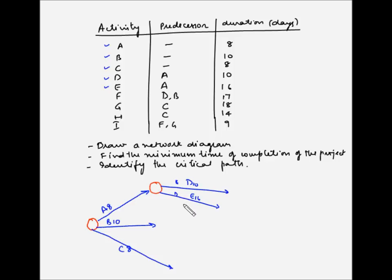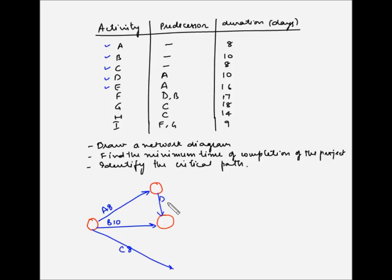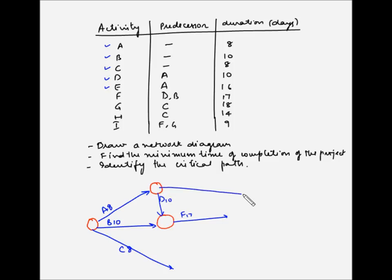Let me redraw the diagram. I'll draw a node here, and from this node draw D which takes 10 days. Since F is dependent on D and B, from this node I can draw F which takes 17 days. And I'll draw E here, which takes 16 days. So we have completed F.